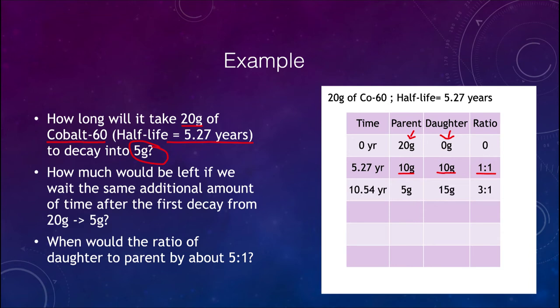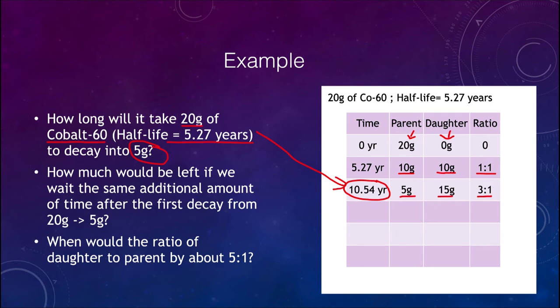Going one more half-life — another 5.27 years, bringing us to 10.54 years — the parent is now down to 5 grams. So the answer to the first part is 10.54 years. At this point we have 15 grams of the daughter, giving a ratio of 3 to 1. For the purposes of this class, you can draw out the table and use it to explain your answers without needing logarithms.